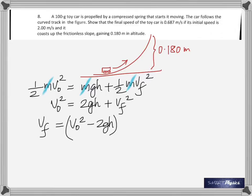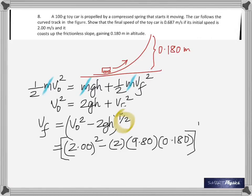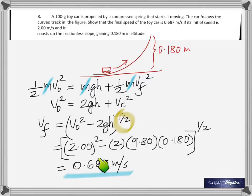This equation — v_f² = v₀² minus 2gh — is the same kinematic equation you've seen before, where g is acceleration and h is height. Substituting the values confirms the final velocity is 0.687 meters per second.